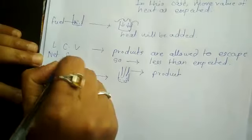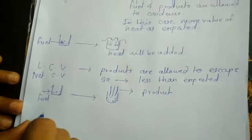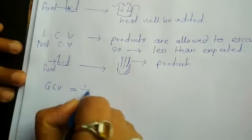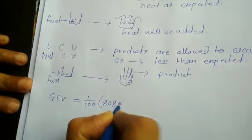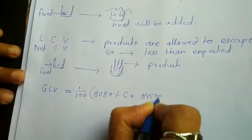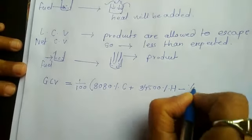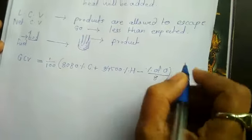These two calorific values can be calculated by using equations. GCV is equal to 1/100 times [1880 percentage of carbon plus 34500 times (percentage of hydrogen minus percentage of oxygen divided by 8) plus 22400 percentage of sulfur].